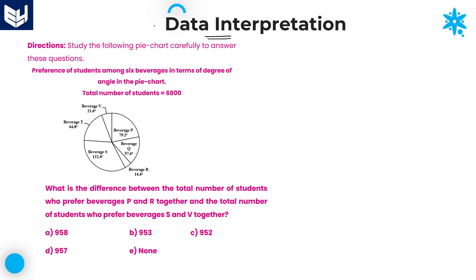First of all, we need to read the information carefully and then solve the questions according to the information. Here the information is about preference of students among six beverages in terms of degree of angle in a pie chart.